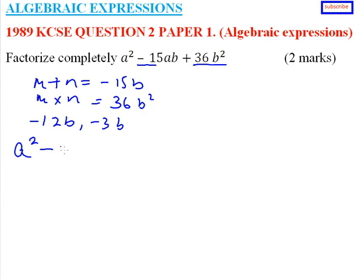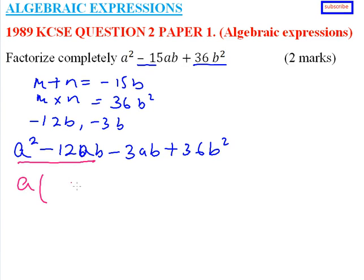From there we factor out what is common from each group. We factor out a from the first group, leaving a(a - 12b). Then we factor out -3b from the second group, leaving -3b(a - 12b).